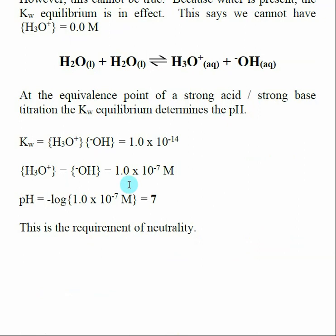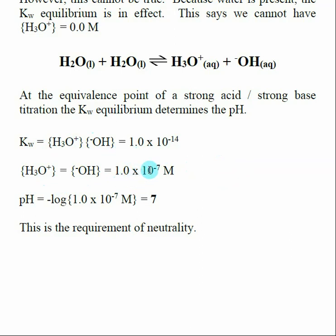Kw is equal to the concentration of hydronium times the concentration of hydroxide, which equals 1×10⁻¹⁴. At the equivalence point the concentrations of hydroxide and hydronium are equal to each other — both equal to 1.0×10⁻⁷ — giving a pH equal to 7.